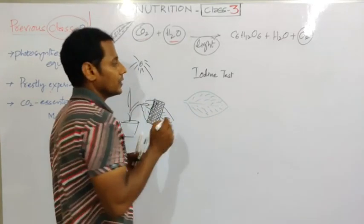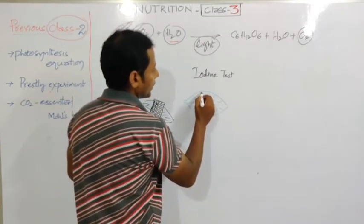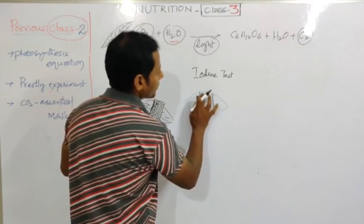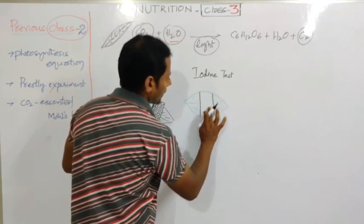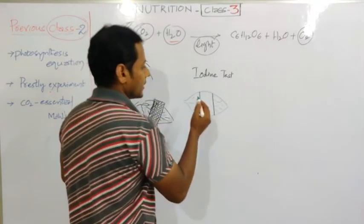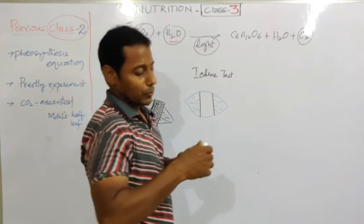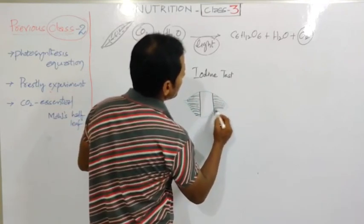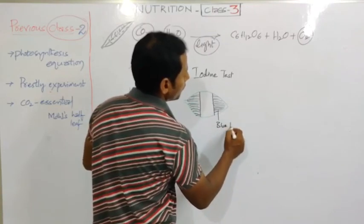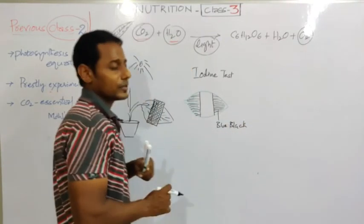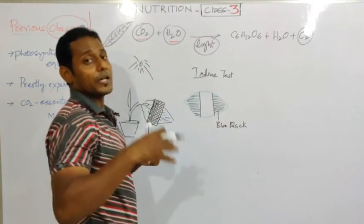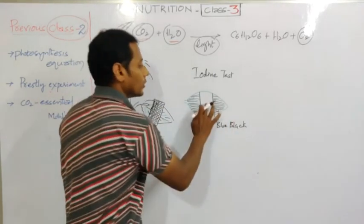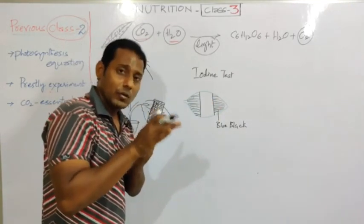After the iodine test, the part of the leaf that was covered by the black paper - where light did not fall and photosynthesis did not occur - will not show starch. That part will remain without the blue-black color. The rest of the part that was exposed to light becomes blue-black in color. This part becomes blue-black in color, meaning starch was produced there through photosynthesis.